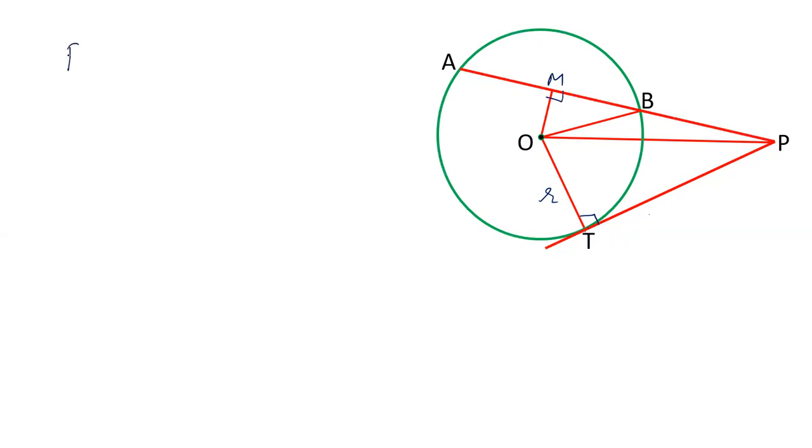We will start from the point PA into PB. P to A is this point, this line PA. It can be written as PM plus AM. So PA can be written as PM plus AM. And PB can be written as PM minus BM.